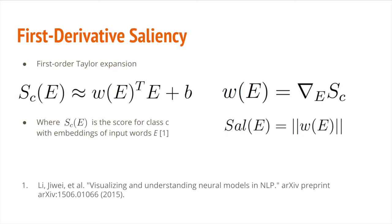To interpret our results, we used first derivative saliency. What we did is we took the score function, which is used to predict the actual beer style, and then we took the gradient of that function with respect to E, our word embeddings, and then we took the magnitude of that and got our saliency score.